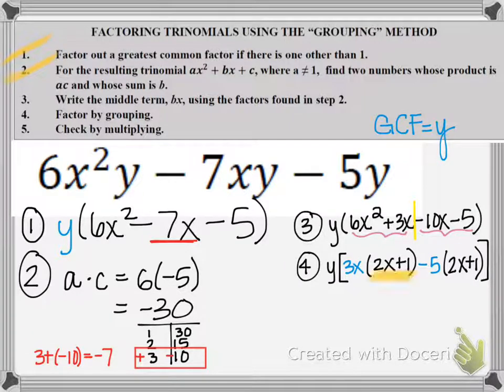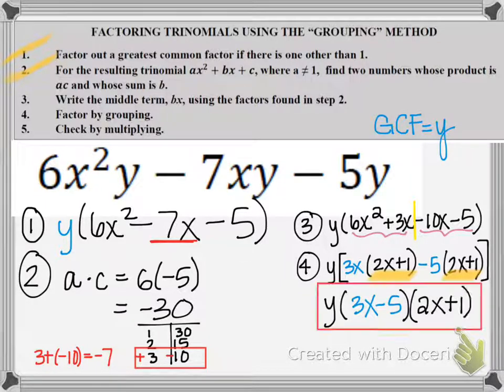Now, this is when we get to get really excited because our two binomials match. That means we're on the right path to solving this problem. So we're ready to give our answer. We have our y as our GCF. The 3x minus 5 makes up one binomial. And then the 2x plus 1 makes up the other binomial. So there's my answer.